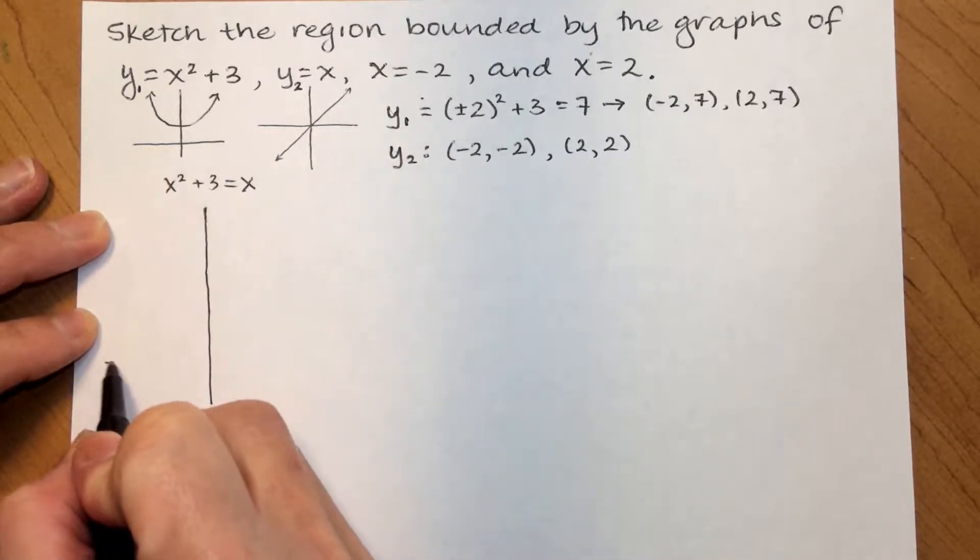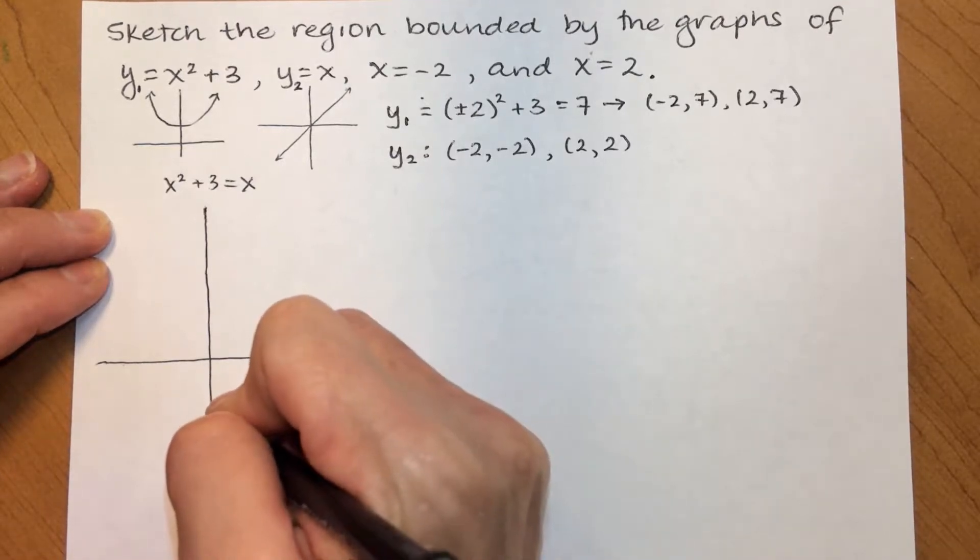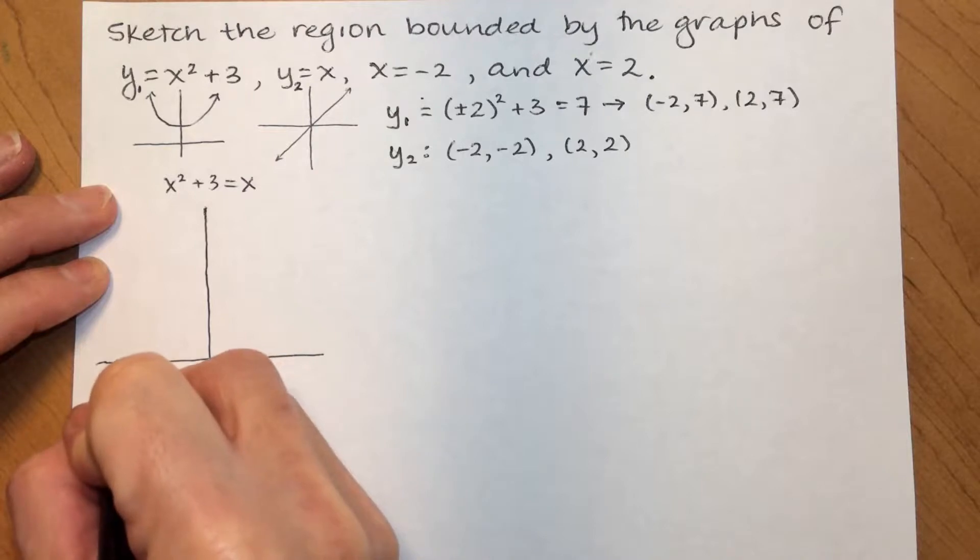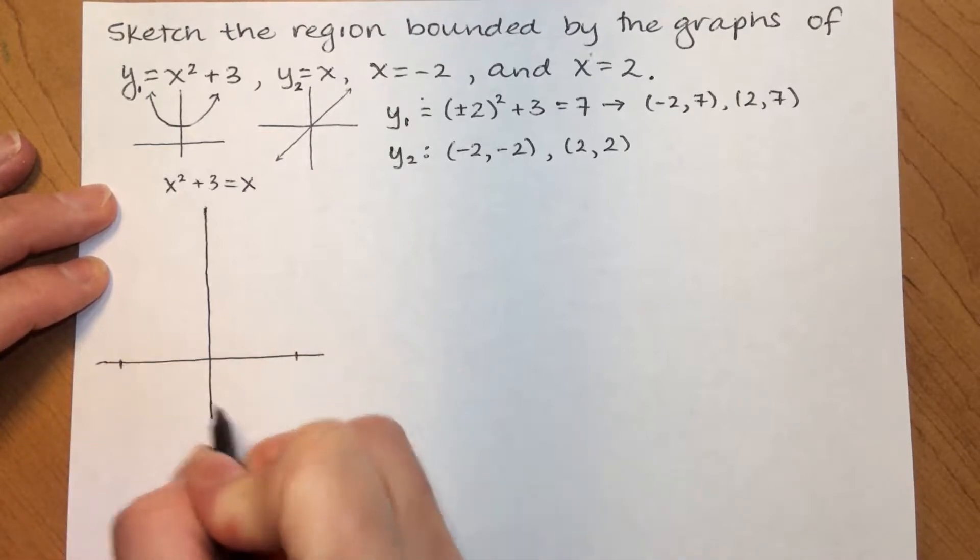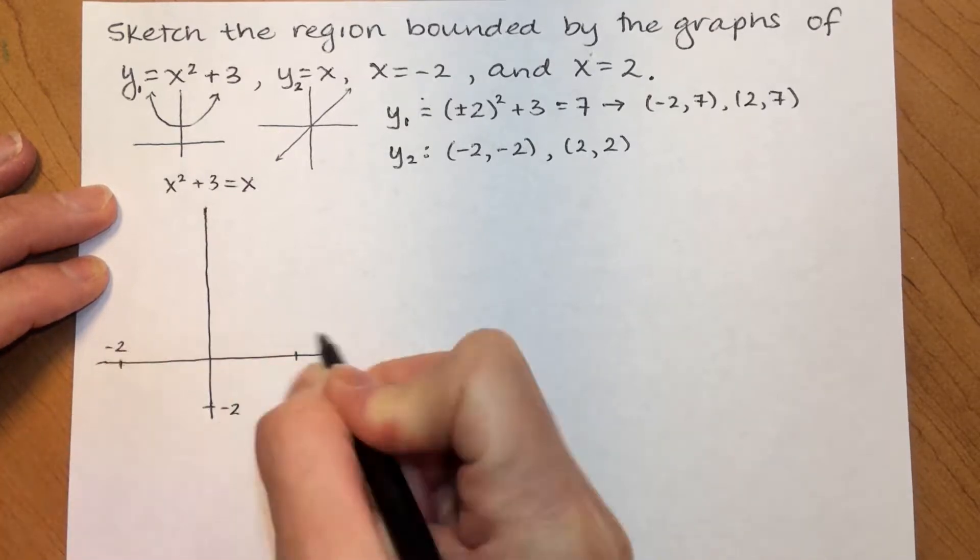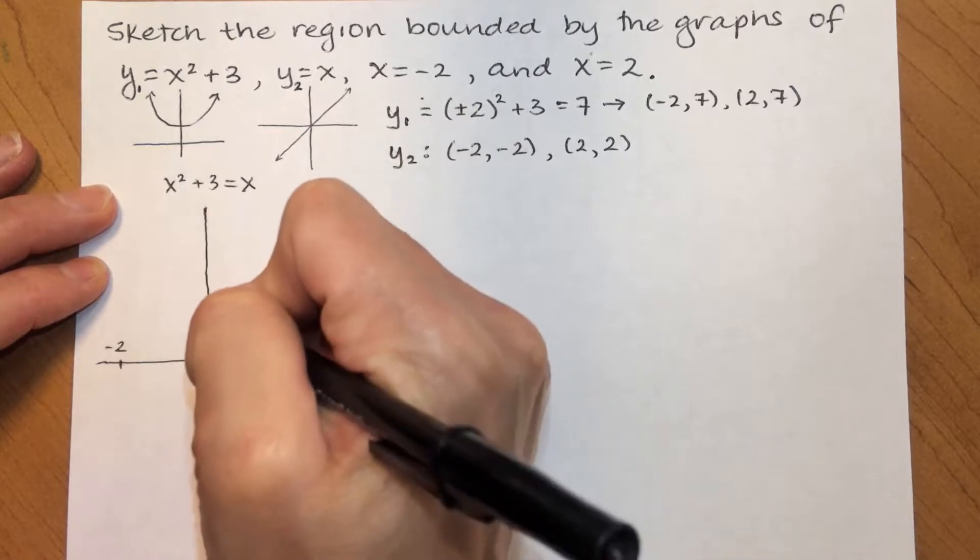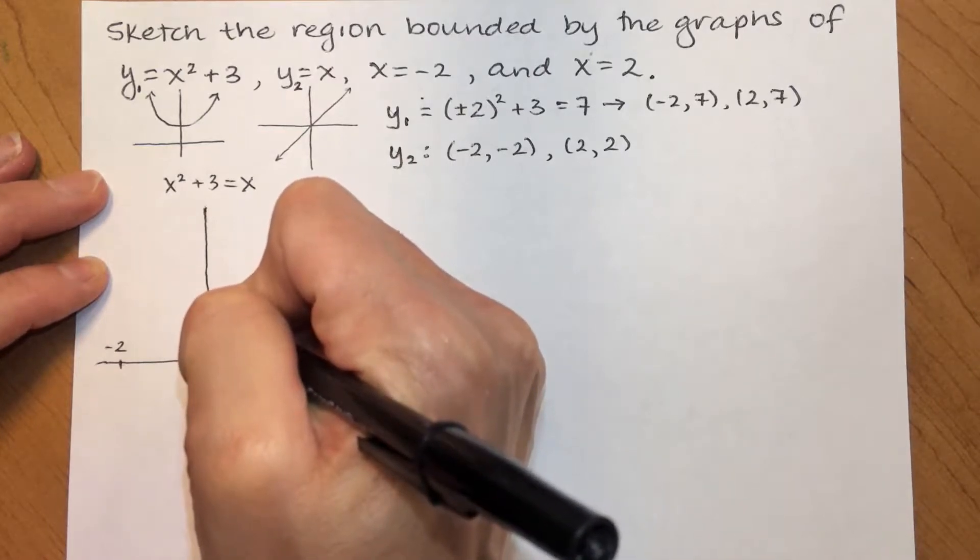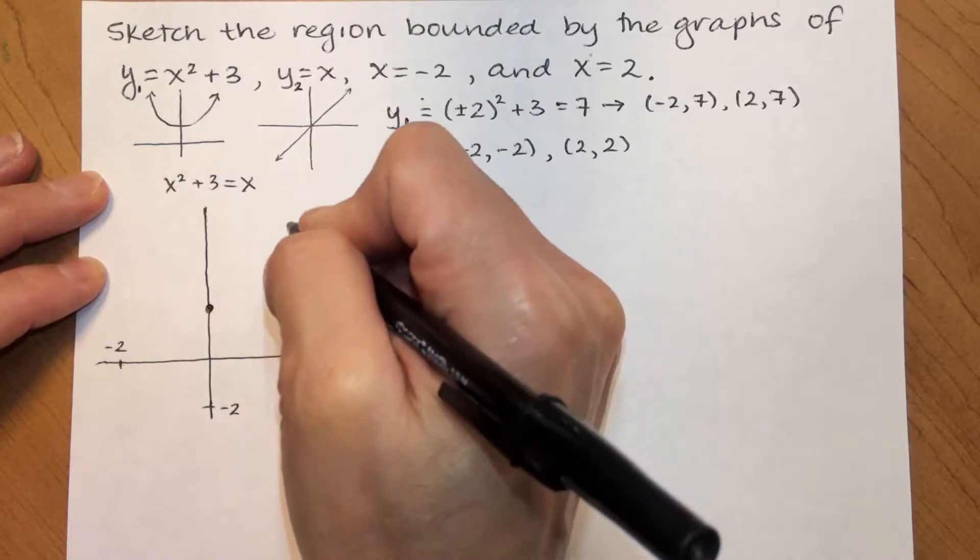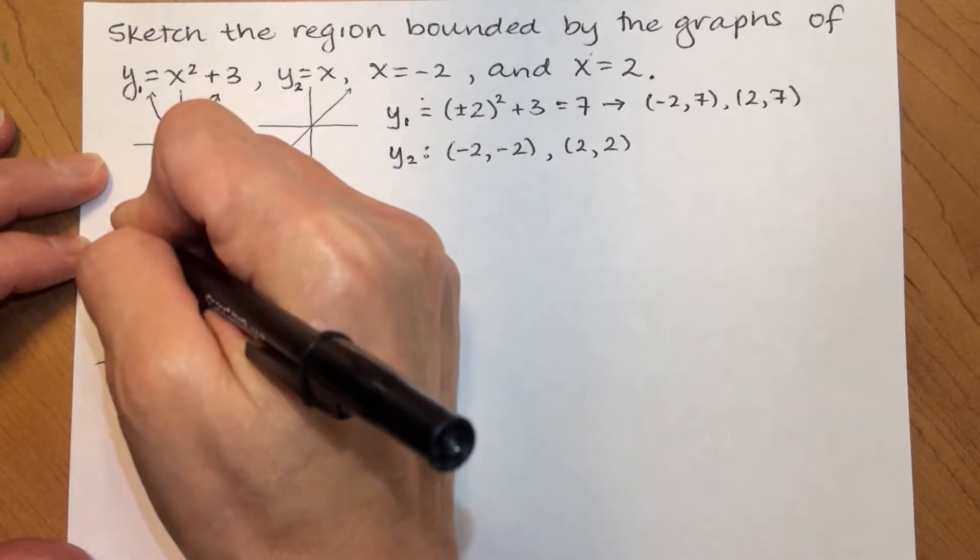Okay. So, let's get the sketch going here. Let's go like this. Okay. And, let's plot some points. So, we'll call this negative 2 to 2. And, negative 2 to 7. Okay. So, the parabola, that's going to be 0, 3, 2, 7, and negative 2, 7.